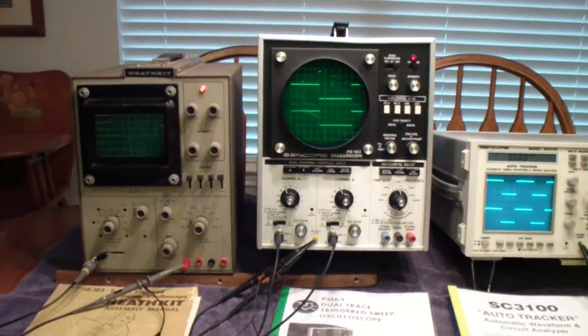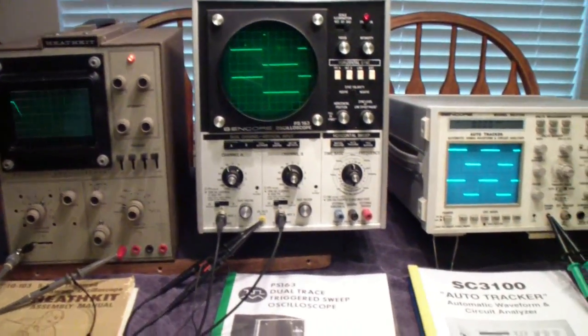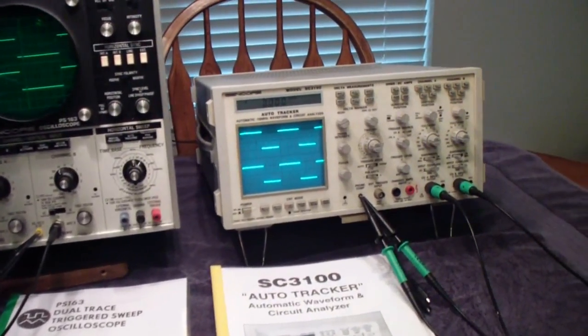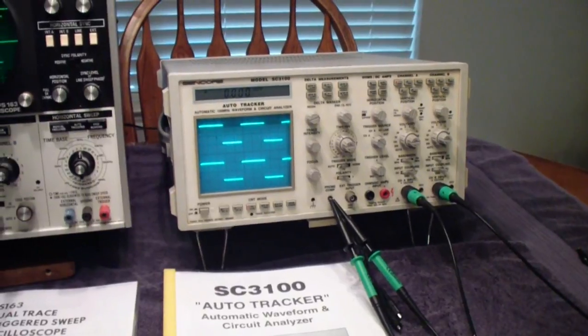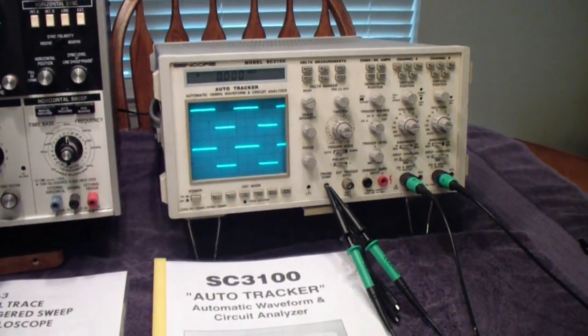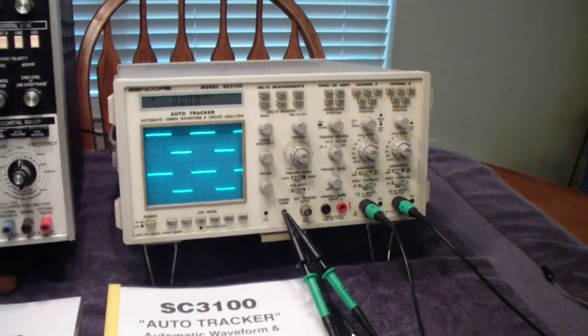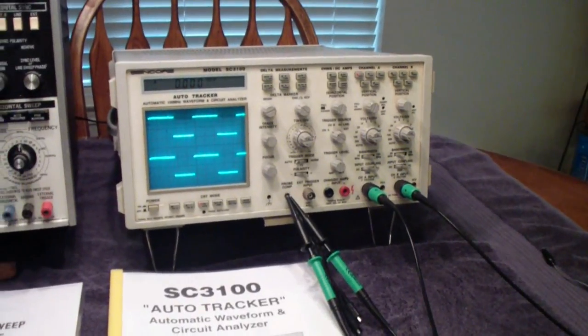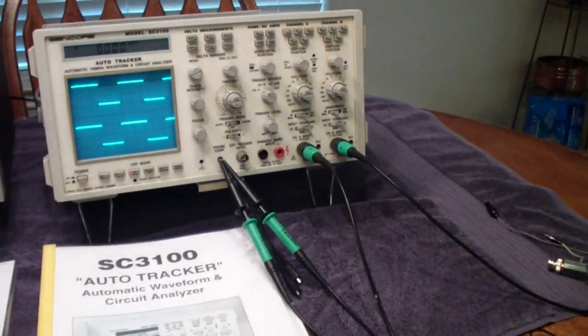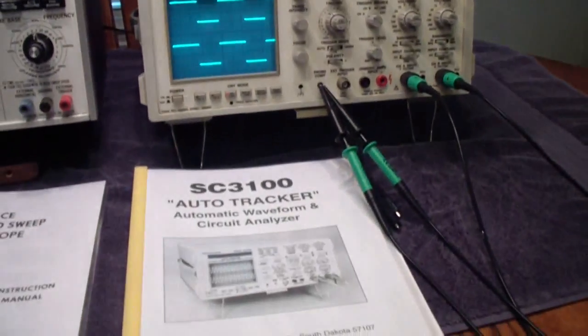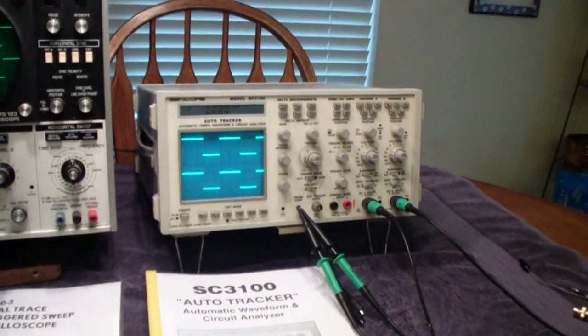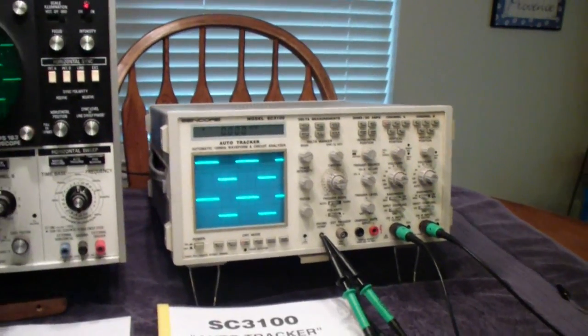Here are three vintage oscilloscopes, one you've already seen if you watched the first in this series, the SC3100 by Sencore. Most of that was about making up some probes that would work with the special features of the Sencore. If you haven't seen that one and you're interested in that sort of thing, you might go back and look at it.